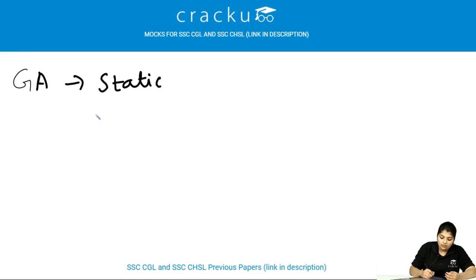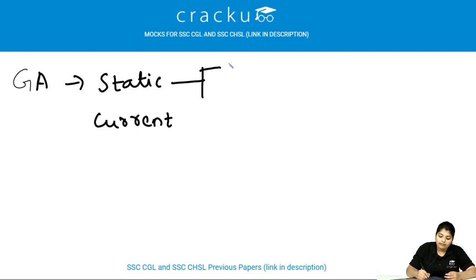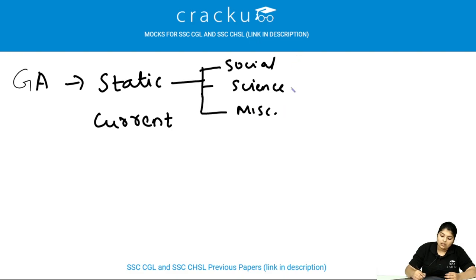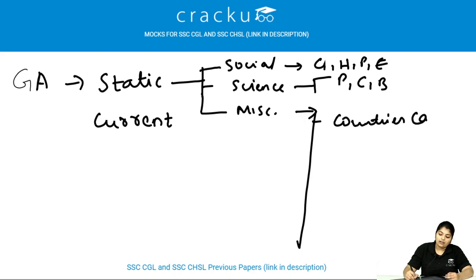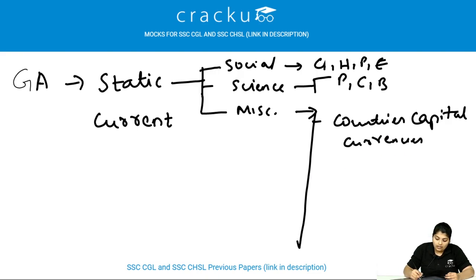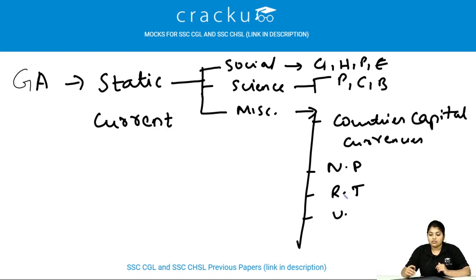In static we have social science and miscellaneous. Under science we have physics, chemistry, and biology. Social covers geography, history, civics or polity, and economics. Under miscellaneous we have topics like countries and currencies, capitals, national parks, rivers and tributaries, and UNESCO World Heritage Sites — so many topics.